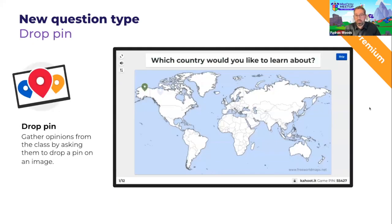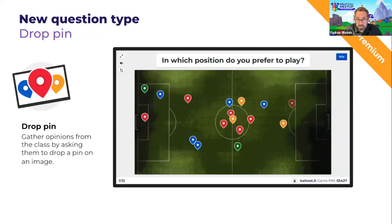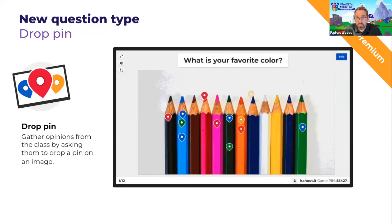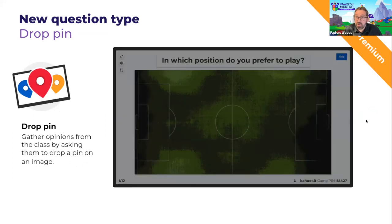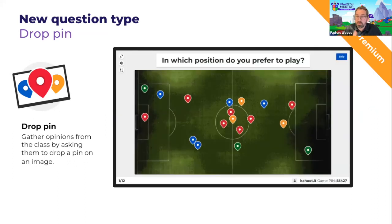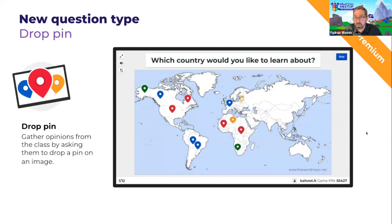The final question type I would like to share with you is called Drop Pin. Drop Pin is a type of poll question where students simply drop a pin on an image. It's a very versatile question type that can be used in many different ways, such as where are you in the world, which colour is your favourite, or which position would you like to play on the soccer pitch. A lot of these question types will be available in Coffee Kahoot later today for you to try yourself.